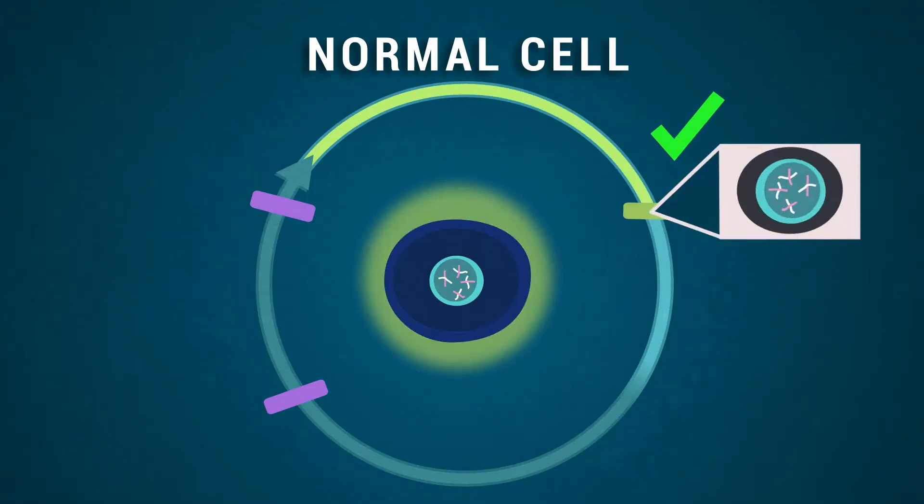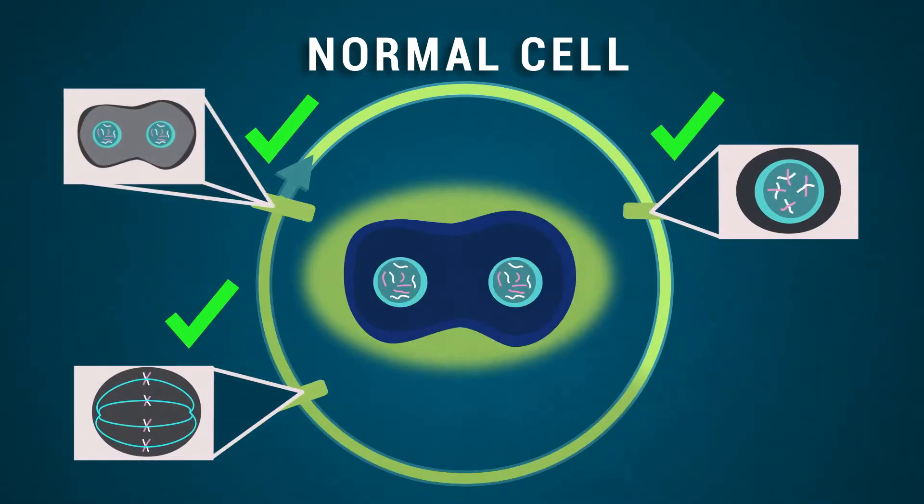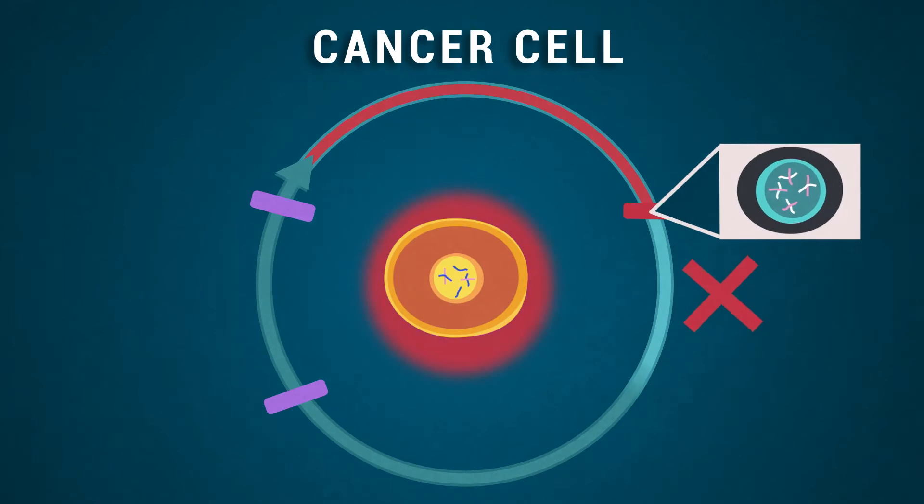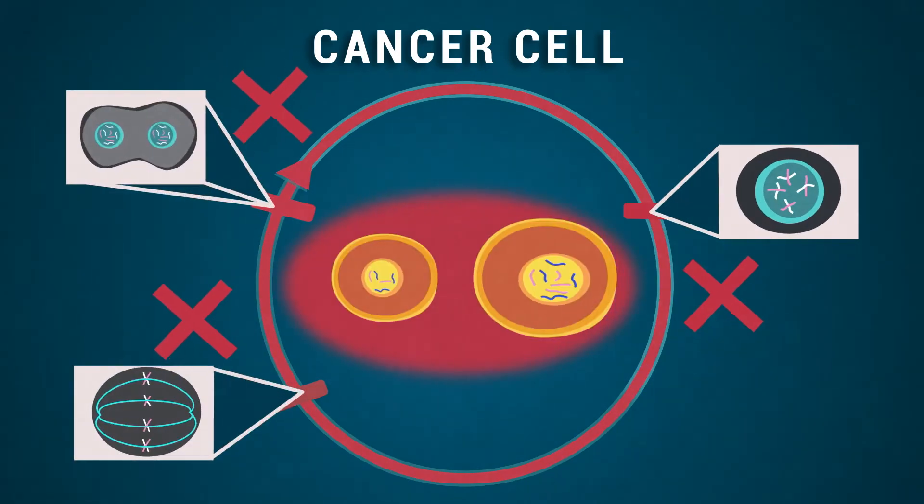Sometimes there is confusion between the words cancer, tumor, lesion, and mass — the reality is that these terms are all used interchangeably. In simple terms, cancer is abnormal cells that your body produces from different organs that can spread to different parts of your body. Cells normally divide in a very controlled manner, and there are checkpoints in place. Cancer cells evade those normal checkpoints, and that's what cancer is: uncontrolled cell growth of the wrong cells.